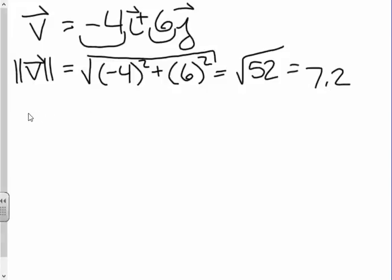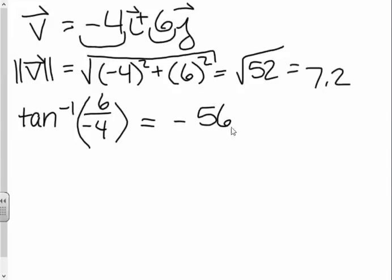In order to find direction, remember that we use arctangent or inverse tangent, and it's always the y value over the x value, or 6 over negative 4. So we're going to plug this in, tangent inverse of 6 over negative 4, and we get negative 56.3 degrees.